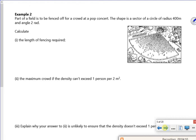Right, let's have a look at this next one. So it says part of a field is fenced off for a crowd at a pop concert. The shape of the sector has a radius of 400 metres and an angle of 2 radians. So the length of the fencing - the fencing will be 400 there, 400 there, and 400 there.